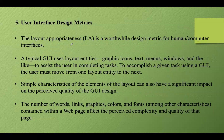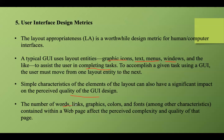User interface design metrics are essential for evaluating the effectiveness, usability, and overall quality of a user interface. These metrics help designers and developers understand how well the UI meets user needs and supports a positive user experience. A typical GUI uses layout entities like graphic icons, text, menus, windows, etc. Simple characteristics of these elements can have a significant impact on GUI design quality — the number of words, links, graphics, colors, and fonts present in a web page affect its complexity and quality. Key UI design metrics include usability metrics, user satisfaction metrics, engagement metrics, accessibility metrics, and visual design metrics, which evaluate how effectively visual elements are arranged and measure contrast between text and background colors.